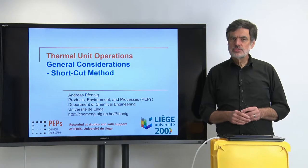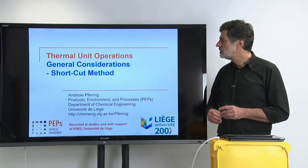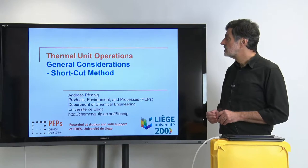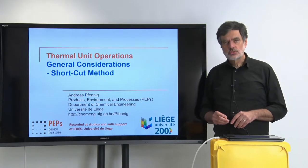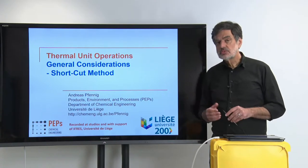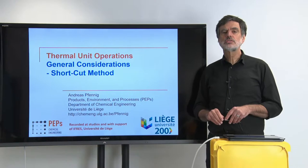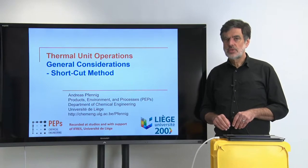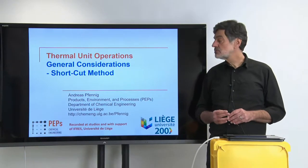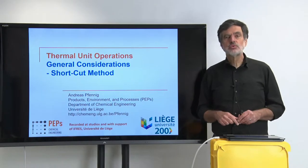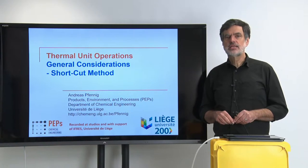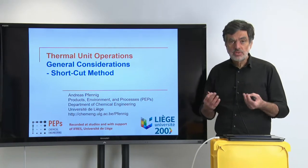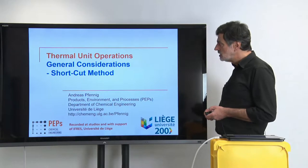Welcome back to this video series on thermal unit operations. We are back in the chapter on general considerations, and in this video I would like to continue and finalize the things I want to talk about concerning shortcut methods. In the last video we developed shortcut methods for the single stage as well as the cross-current multi-stage process. In this video I would like to show the next complication, which is the counter-current process.